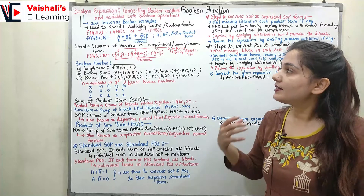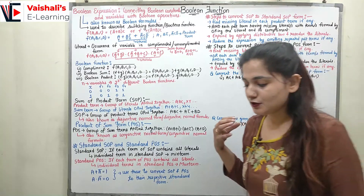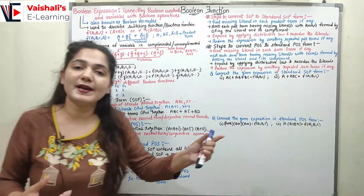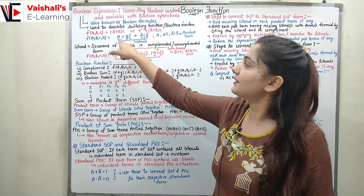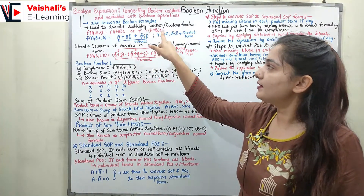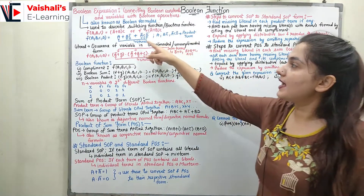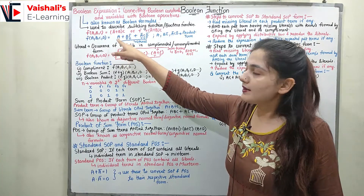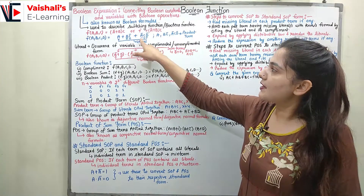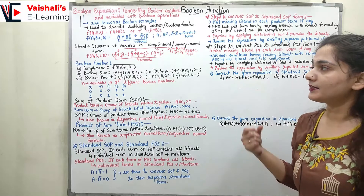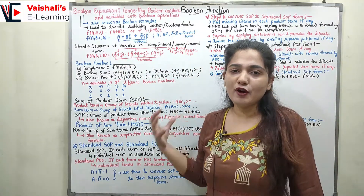Here a, b, c_bar, a_bar are all literals. The boolean variables in their complemented or uncomplemented form are called literals. So here we have six literals: a, b, c_bar, a_bar, c, d, d_bar. We also have product terms: the first term 'a' is a product term, then 'bc_bar' is a product term, and 'a_bar·c·d_bar' is also a product term.